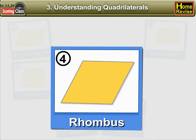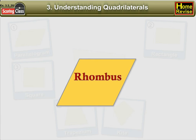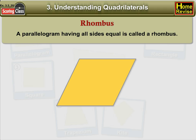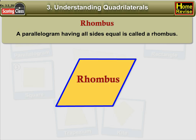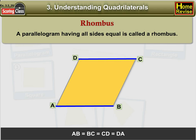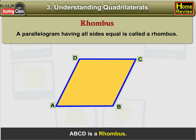4. Rhombus. A parallelogram having all sides equal is called a rhombus. In the figure, AB is equal to BC, that equals to CD, that equals to DA. Therefore, ABCD is a rhombus.